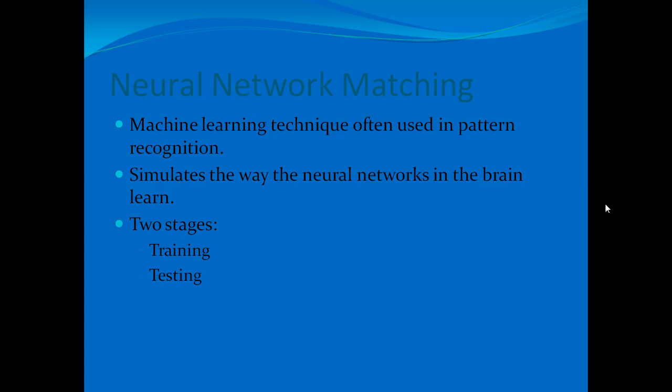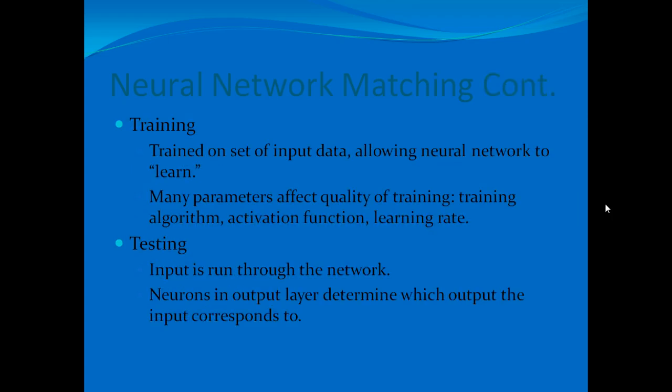The final method of fingerprint matching performed was neural network matching. Neural networks are a machine learning technique often used in pattern recognition; they simulate the way that neural networks in the brain learn. There are two stages: training and testing. In training, the neural network is trained on a set of input data to allow it to learn. Many parameters affect training quality, including the training algorithm, the activation function, and the learning rate. In testing, inputs are run through the network and neurons in the output layer determine which output the input corresponds to.